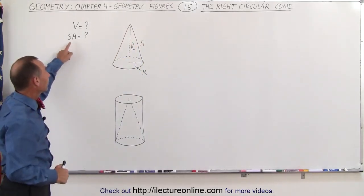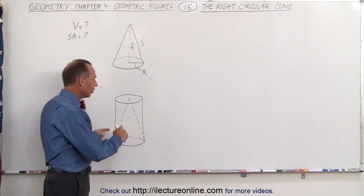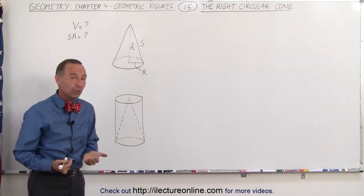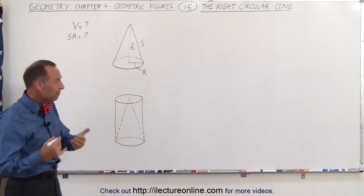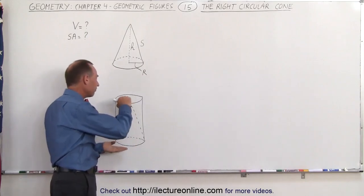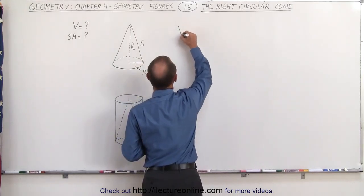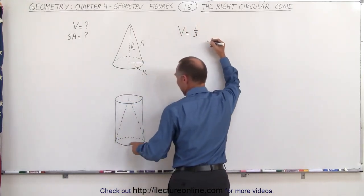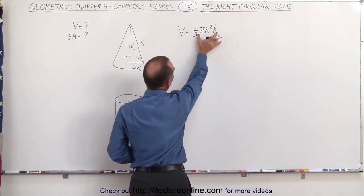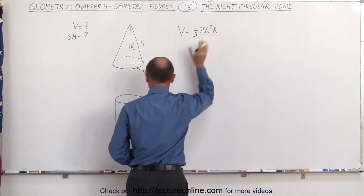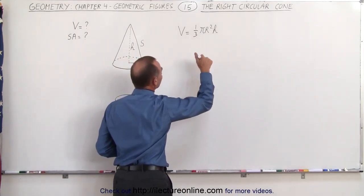We're trying to find the volume and the surface area of this cone. For the volume, it turns out that it's actually a fraction of the volume of a cylinder that it fits into. The volume of the cylinder would be the area of the base times the height, like we saw in the previous video, and then all we need to do is put a fraction in front of that. It turns out that fraction equals one-third. So the volume equals one-third times pi R squared times the height of the cone.